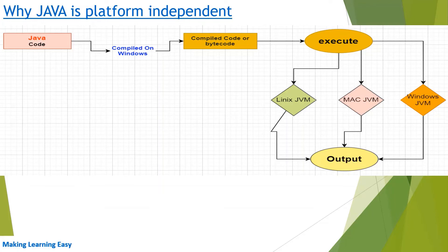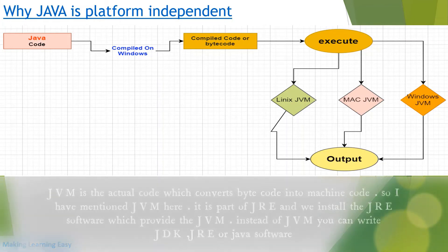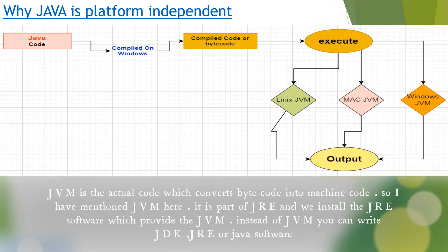The bytecode has a .class extension. Suppose you compiled the code on a Windows system and got the bytecode — that bytecode can be executed on Linux, on Mac OS, or on Windows itself. You don't have to recompile the source code to run it on Linux or Mac. This is the reason Java is platform independent.